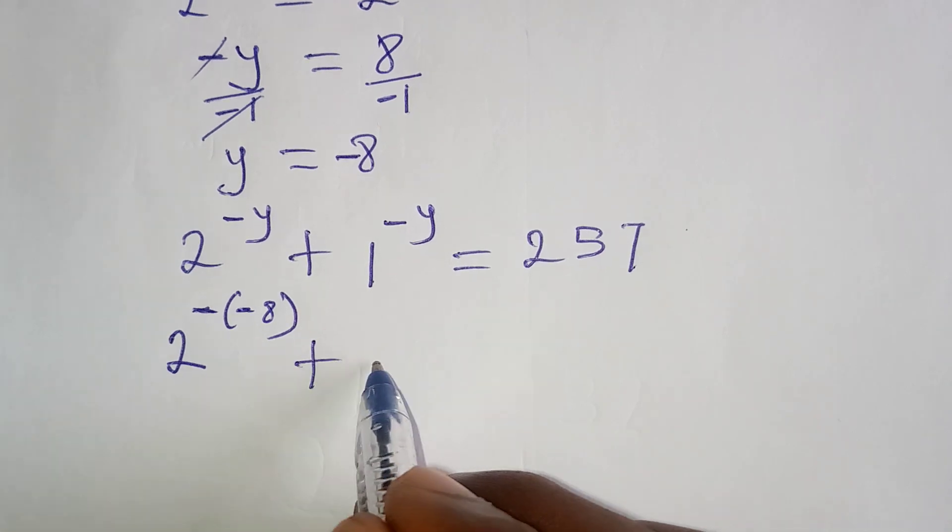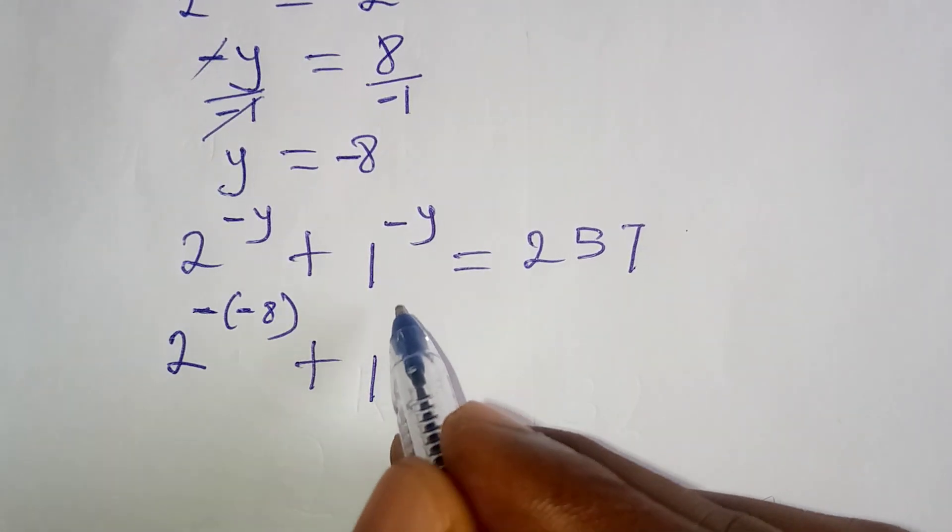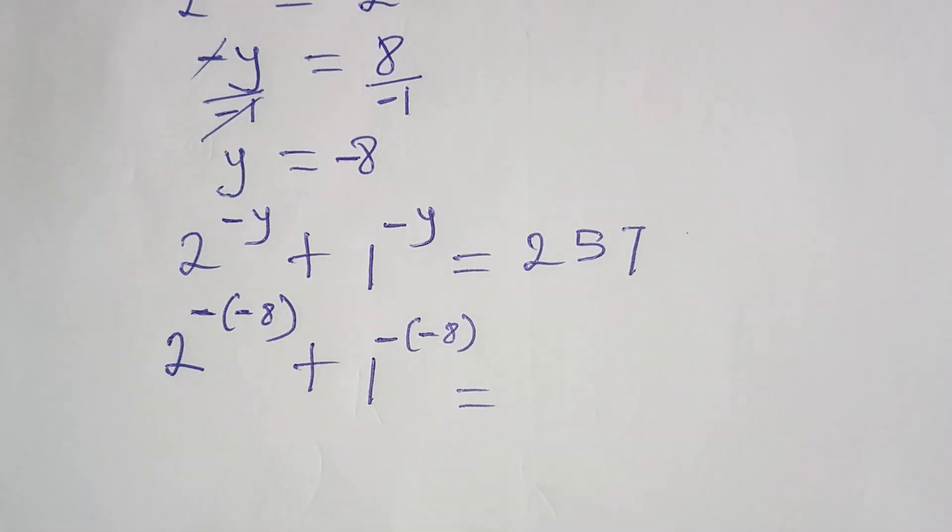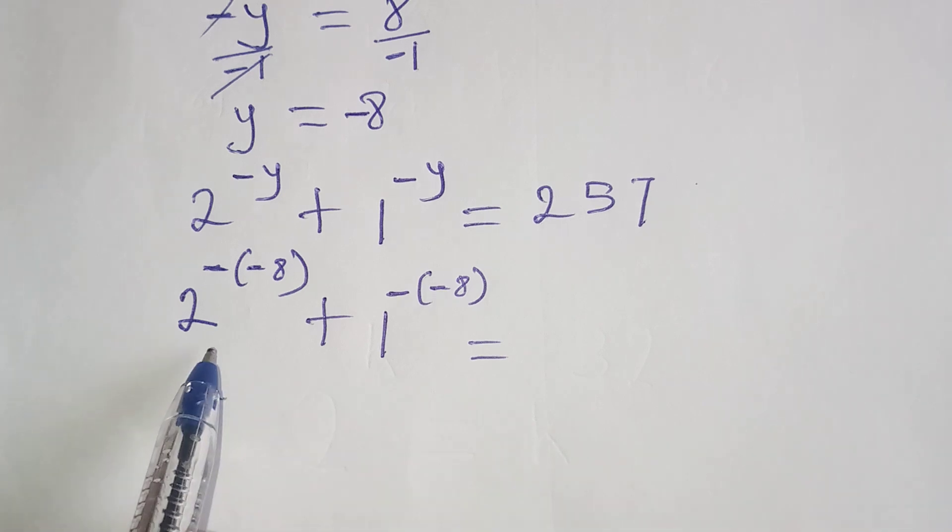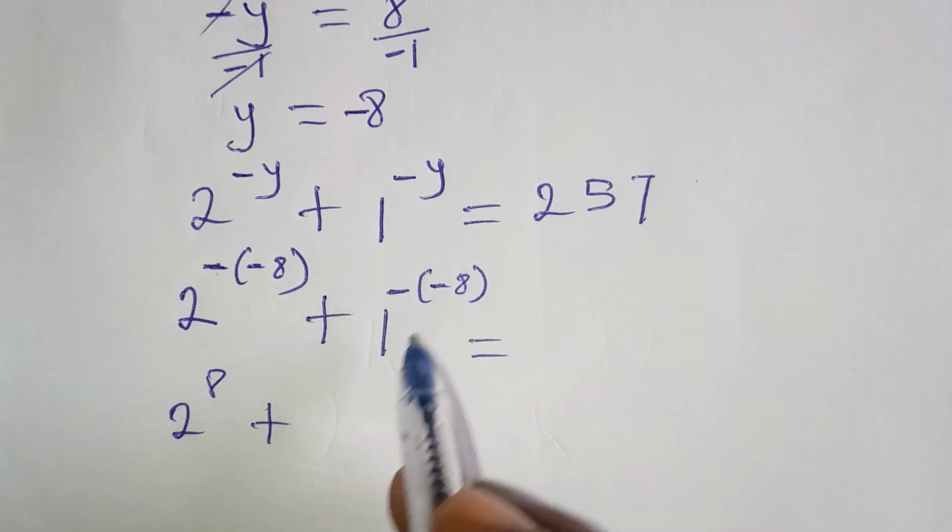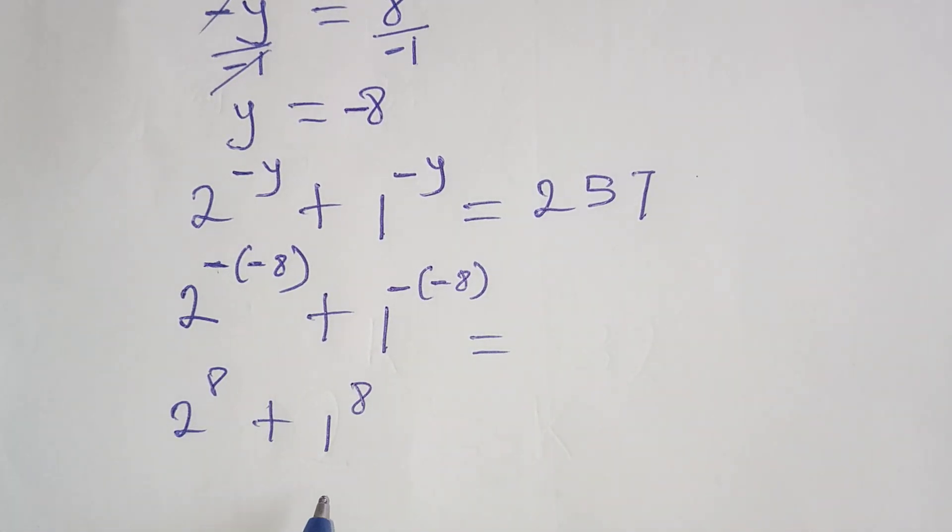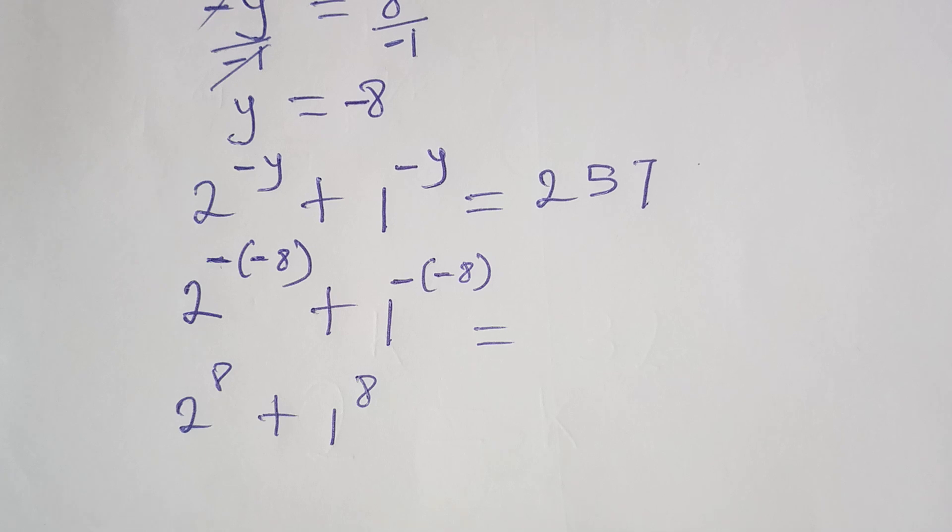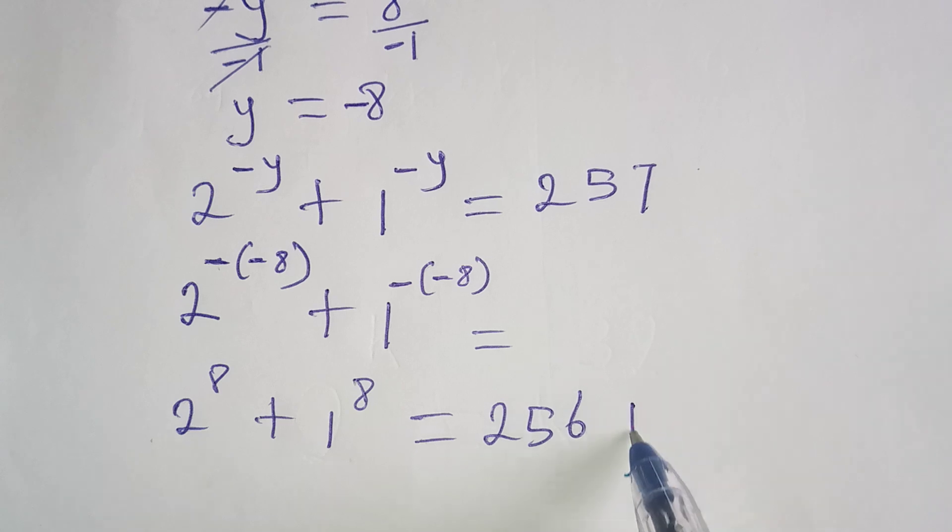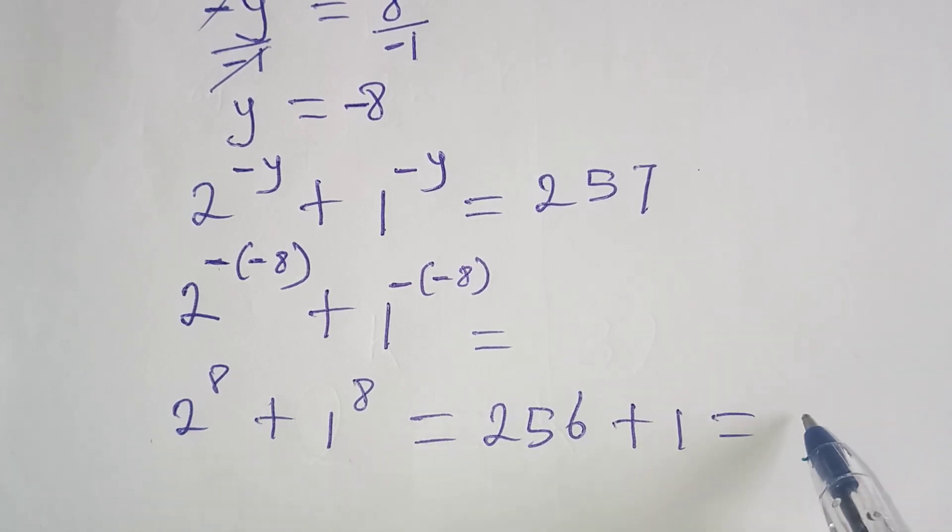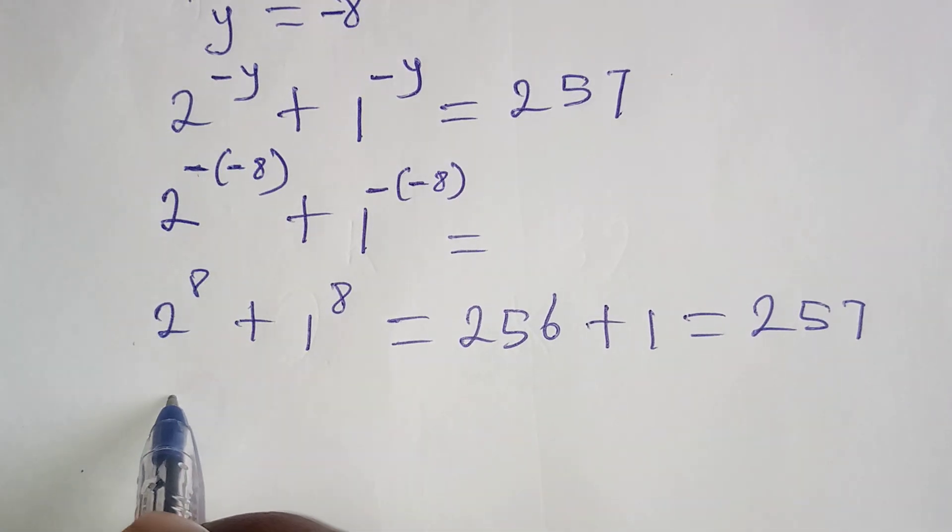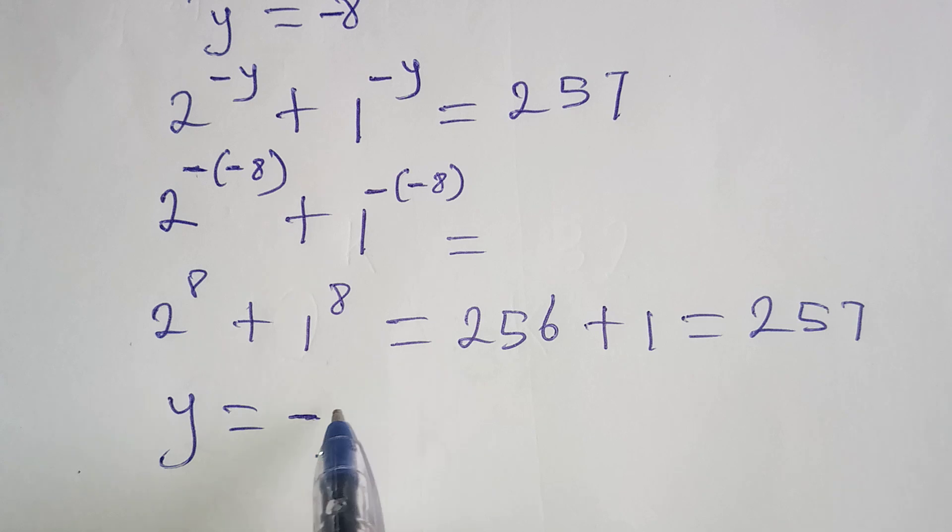Then plus 1 to the power of negative negative 8, and that is equal to what? To get this, remember negative negative will turn to positive, plus negative negative will turn to positive, and 1 to the power of 8 is the same 1, and 2 to the power of 8 is the same 256, then we have plus 1, giving us 257. So we are correct to say that y is equal to minus 8.